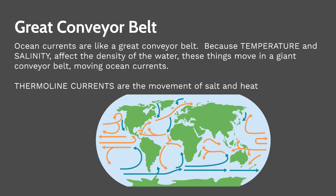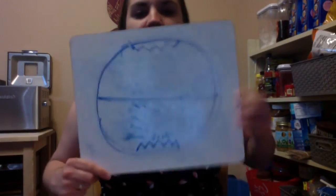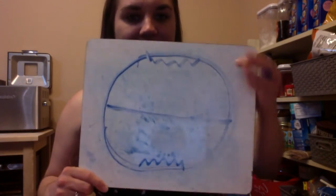I want to take a second to understand this at a basic level. My expectation is not that you memorize specific patterns, but let's imagine we have our little globe. The belly button of the earth, as I like to refer to it, is the equator — it's the part that sticks out in the middle. The equator is going to be warmer, and our poles — the North Pole and South Pole, where the penguins, Santa Claus, and polar bears live — are going to be colder. So: warmer at the equator, colder at the poles.